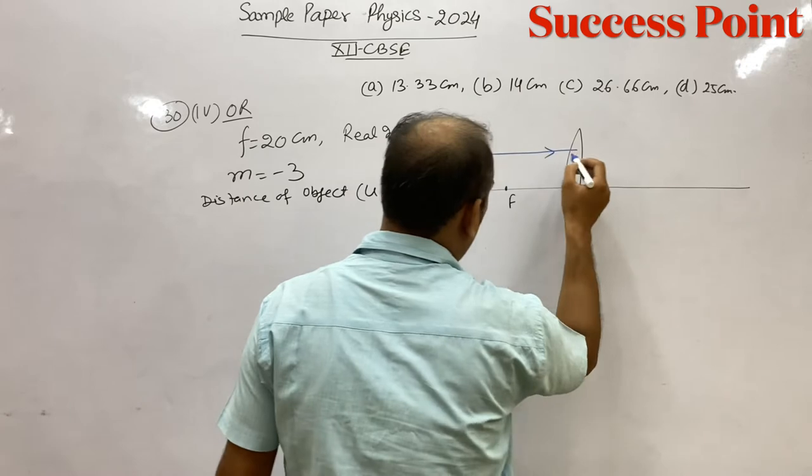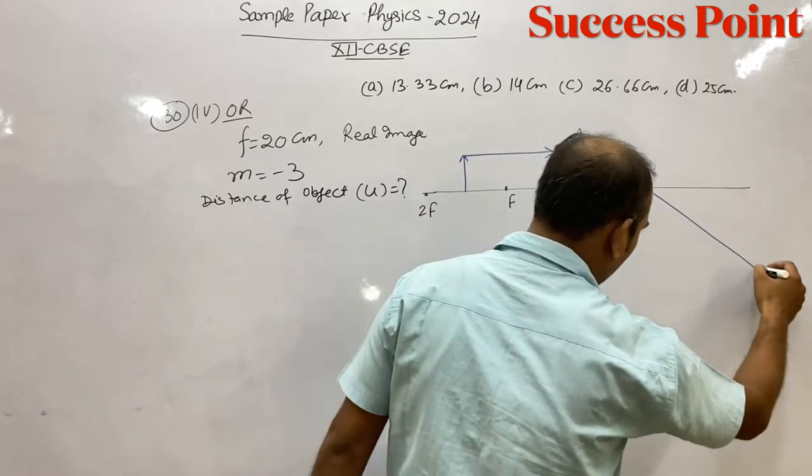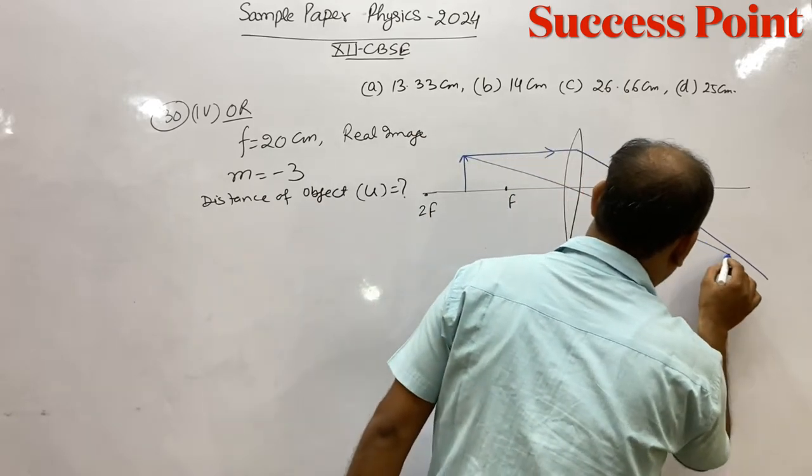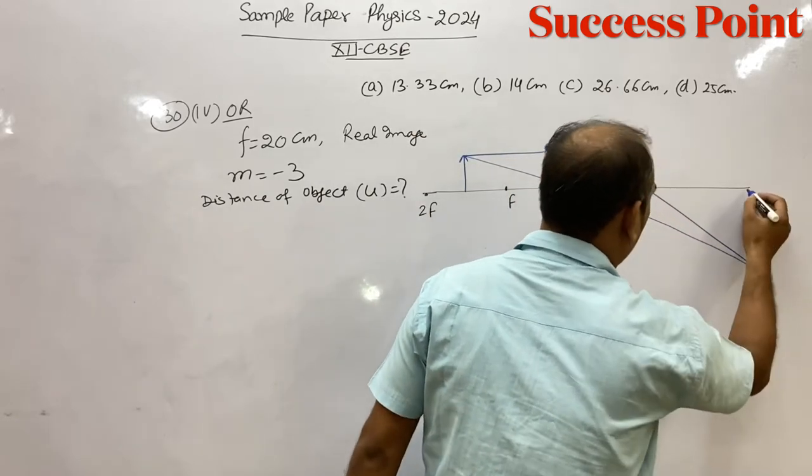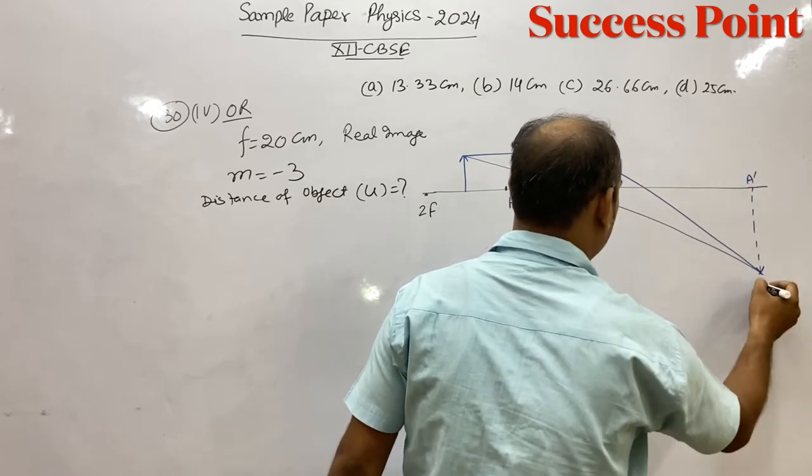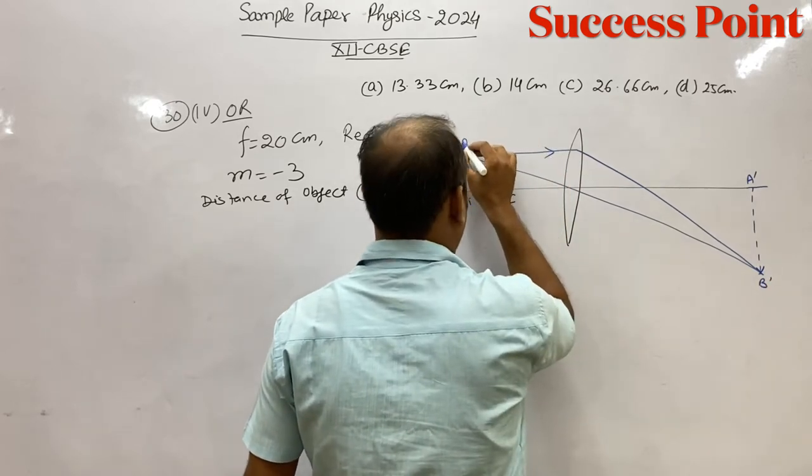Look, a parallel line goes, it goes like this through the focus. And a line goes straight through the center. And somewhere here is the image. Large image, large image is formed, exactly like this.